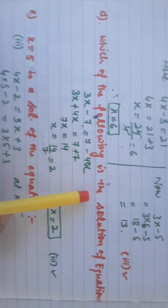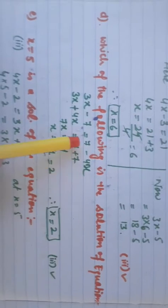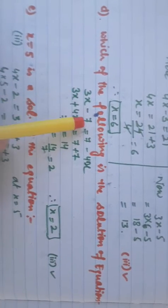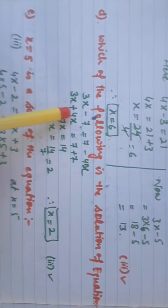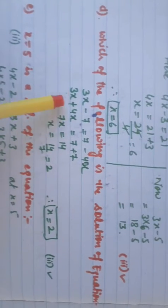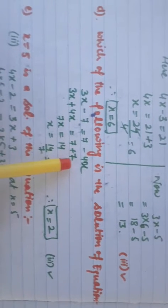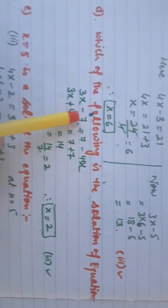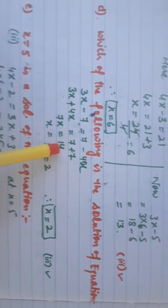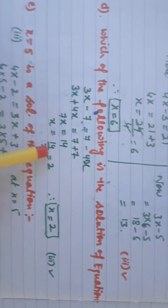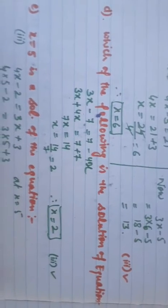Part D: which of the following is the solution of the equation 3x minus 7 equals 7 minus 4x? We separate variable and constant terms: 3x plus 4x equals 7 plus 7, so 7x equals 14, and x equals 14 divided by 7, which is 2. The third option is the correct answer.